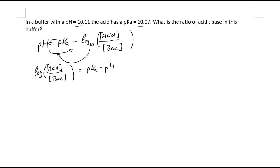And that's fairly straightforward. We can even put numbers in already. So pKa, that is 10.07 minus 10.11, and that would give us negative 0.04.